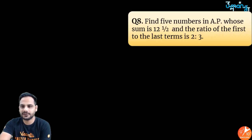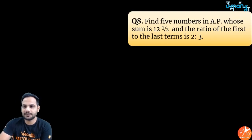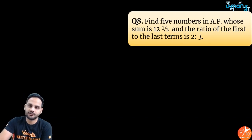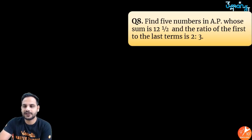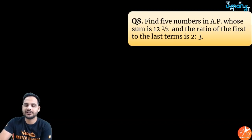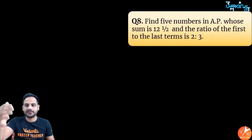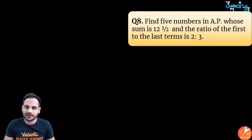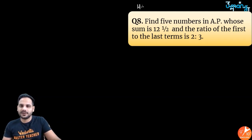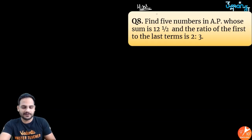Homework question: Find 5 numbers in AP whose sum is 12.5 and the ratio of the first to the last term is 2:3. Since n = 5 (odd), use the middle-term assumption and try to solve this on your own.